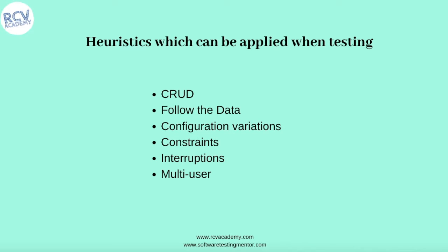Then you try different configuration variations. If configuration changes are allowed in the system, try doing that. Also consider whether there are any constraints in the system. For example, if you are filling up a form and then try to close that window, what is the system's response? Or if there are mandatory fields and you do not fill them and try to proceed, how does the system behave?